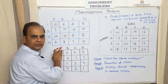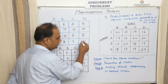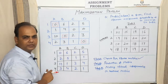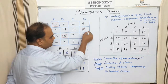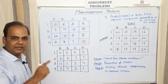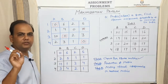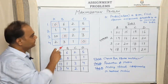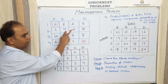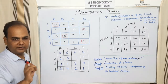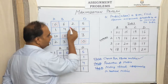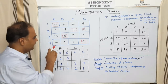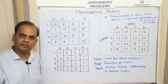Moving to the fourth row: there is a single zero, so assign it and cross out any other zero in that row or column. Now look again at the second row — there is one zero which is neither crossed out nor assigned, so simply assign it. The optimal solution is reached when every row and every column has exactly one assignment.